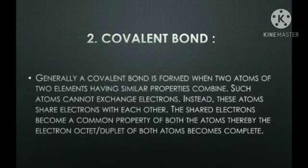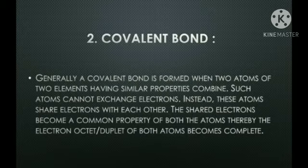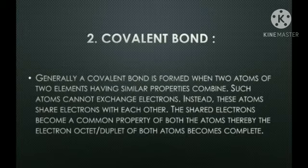The next type of chemical bond is the covalent bond. Generally, a covalent bond is formed when atoms of two elements having similar properties combine. Such atoms cannot exchange electrons. Instead, these atoms share electrons with each other. The shared electrons become a common property of both atoms, and thereby the electron octet or duplet of both atoms becomes complete.